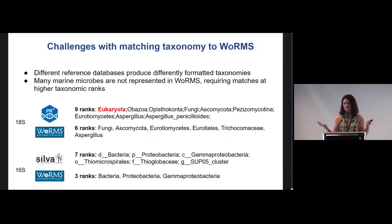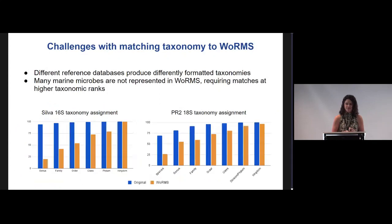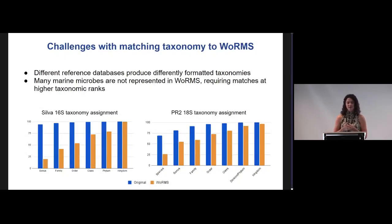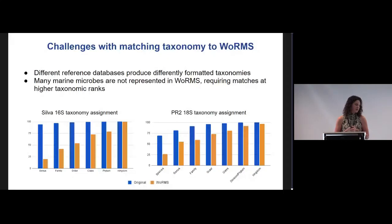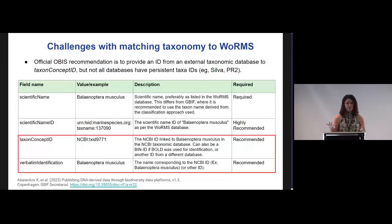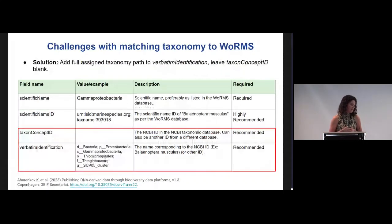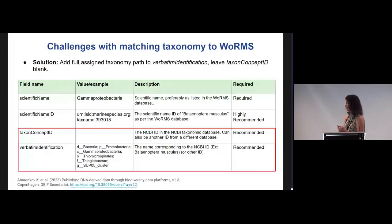Also, the term 'Eukaryota' is not in WoRMS, but is commonly applied with these public datasets — so how do we handle that? This chart highlights in blue the taxonomic levels assigned with our pipeline, and in orange what percent of our taxonomic assignments were able to be mapped to WoRMS. At the genus or species level, a lot of our sequences just were not able to find a good match. Figuring out the best way to capture the whole taxonomic string is not fully explained in the existing documentation, so that's something I've been working on.